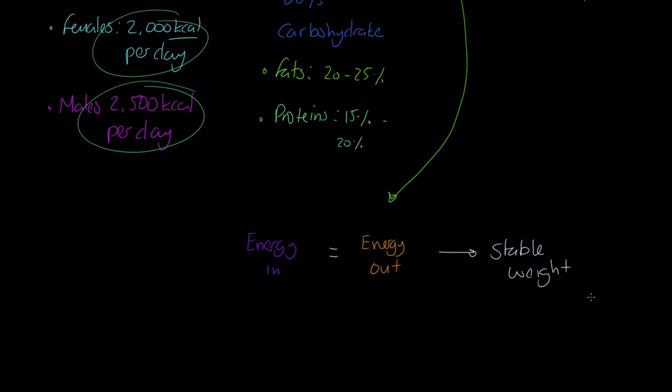What about if energy in was to be less than energy out? What would you expect to happen in this scenario? We've got energy in is less than energy out. In other words, this person is consuming too few calories for the energy they're expending. This person would lose weight over time - not all in one go, this is a gradual thing.